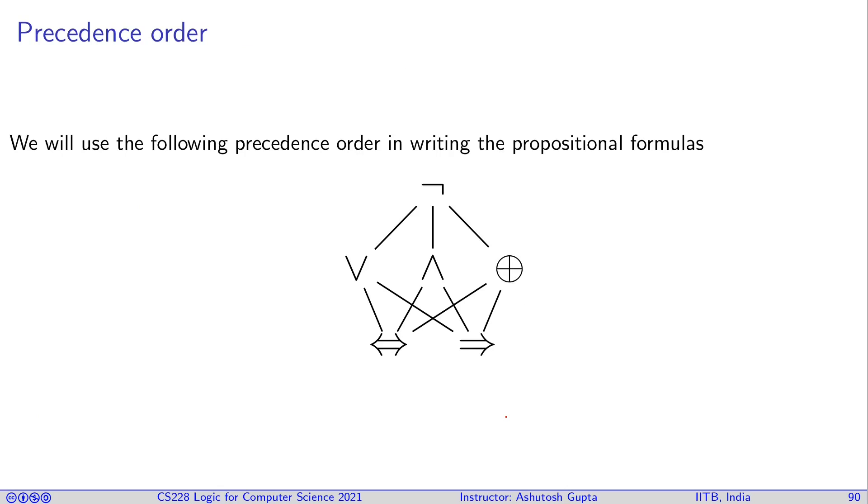Here is a precedence order which is generally being considered for propositional logic. Disjunction, conjunction, and XOR are at the same level. They don't have a preference with each other, but they are preferred better than equivalence and implication. And negation trumps everybody. If negation is there, then it's first applied.